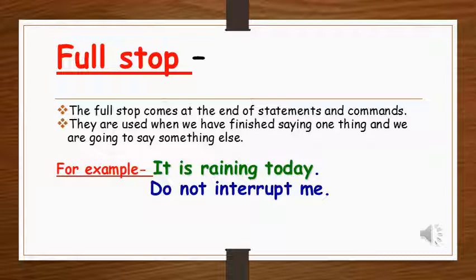The first one is full stop. What do you mean by full stop? The full stop comes at the end of statements and commands. They are used when we have finished saying one thing and we are going to say something else. For example, it is raining today. Do not interrupt me. You are giving an order, a command to someone. Full stop comes at the end of it also.